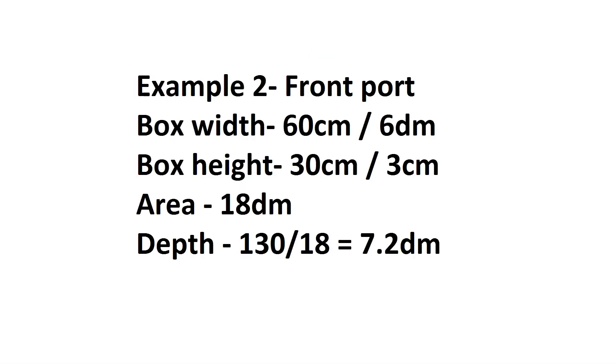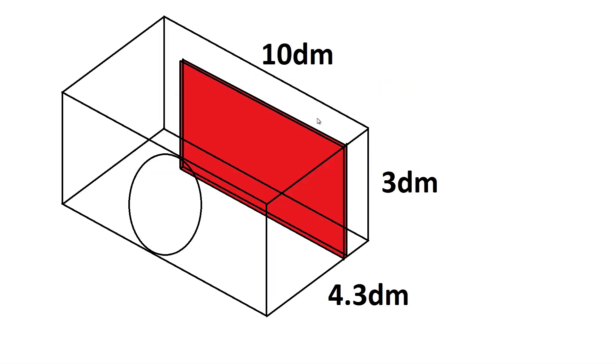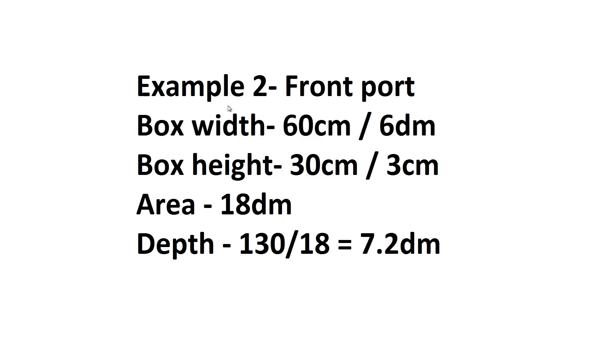Now for the next example, our front port. So now the port is on the front of the box instead of the side, which in this case here it's now going to be on the same face as the driver. I could fit the driver on this face also, but for this example we're going to have a front port with a box width of 60 centimeters and a box height of 30, so the front's now got an area of 18 square decimeters.